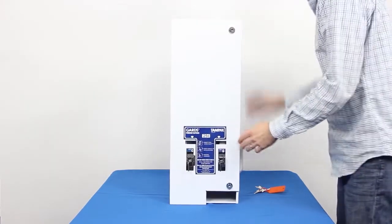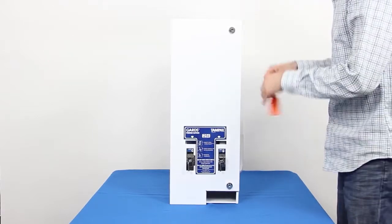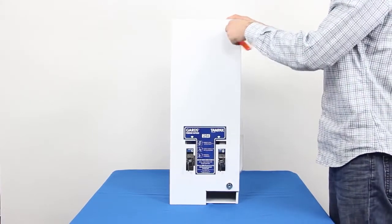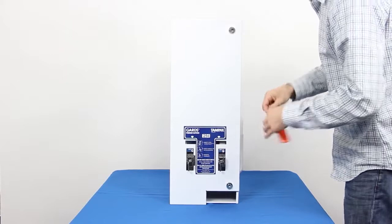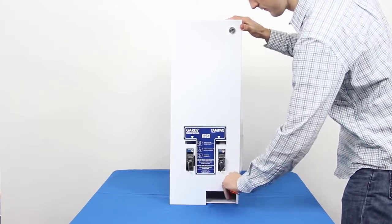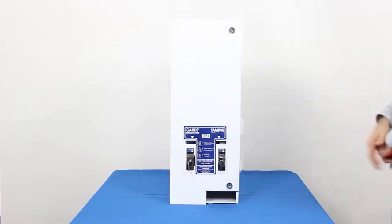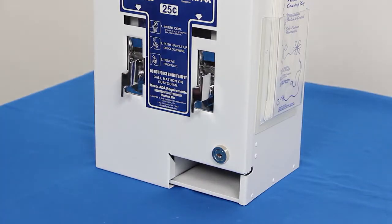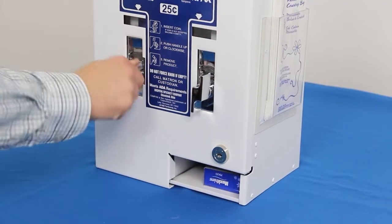Once the weights are in place, close the door and turn the locks to the locked position. Turn each mechanism to make sure the product vends successfully.